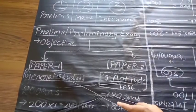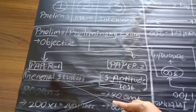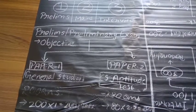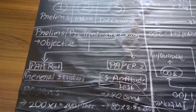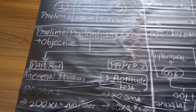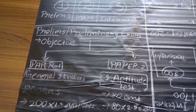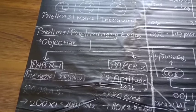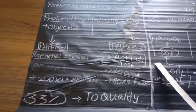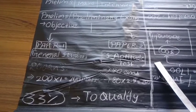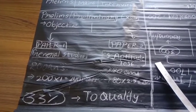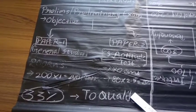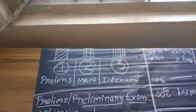Totally 200 questions will be asked from general studies and each question will carry 1 mark, so total marks is 200. For paper 2, the civil service aptitude test, totally 80 questions will be asked and each question will carry 2.5 marks, totaling 200 marks. There is also negative marking—one third of your mark will be reduced if you give a wrong answer. To qualify the prelims you need 33 percentage.